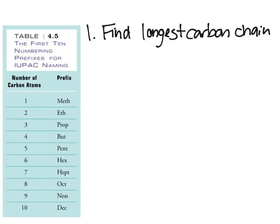Find the longest carbon chain. Let's use something like this, for example. Obviously, you could probably see this is the longest carbon chain. And if you count it, there's one, two, three, four, five, six. So there's six carbons.